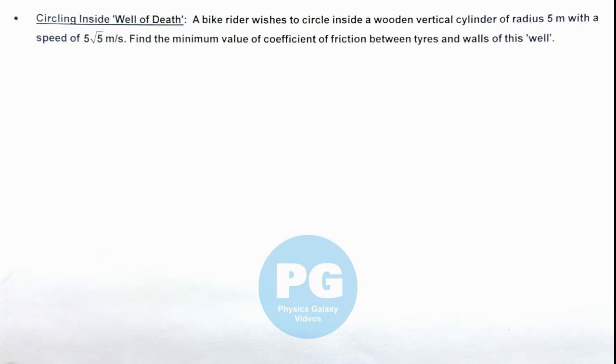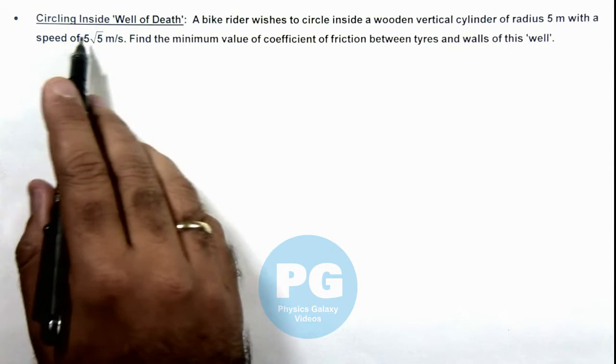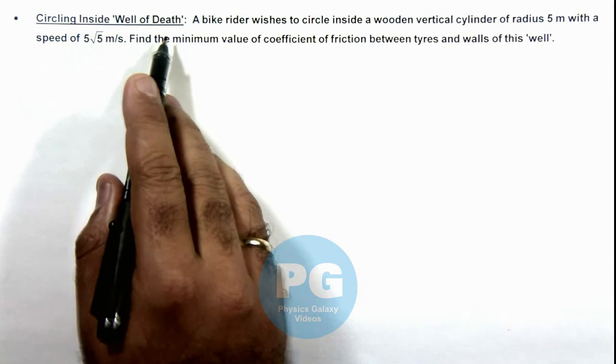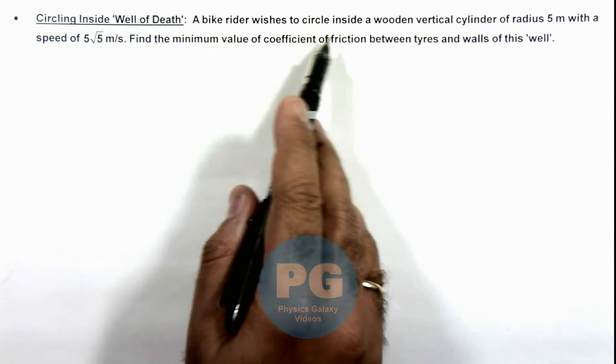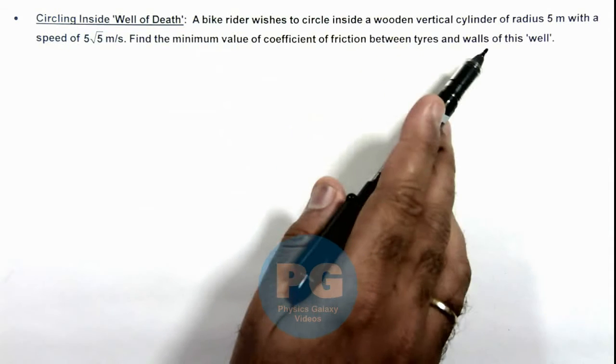In this illustration we'll see about circling inside well of death. Here the situation is stated as a bike rider wishes to circle inside a wooden vertical cylinder of radius 5 meter.